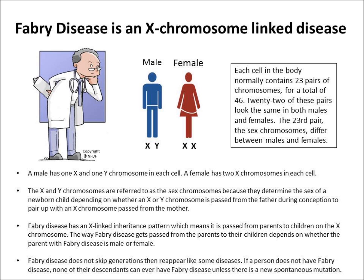Among the contents of the chromosomes are genes that determine a person's physical characteristics. Fabry disease is caused by a defect in a gene at a specific location on the X chromosome. Therefore, Fabry disease has an X-linked inheritance pattern that is different depending on whether the mother or the father passes Fabry disease on to their children. In the next two slides, an X with a plus sign next to it indicates a Fabry affected chromosome.